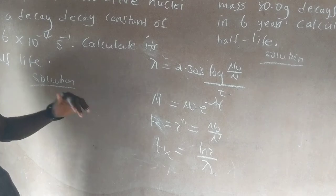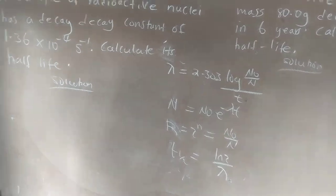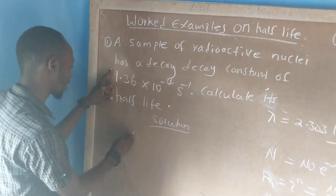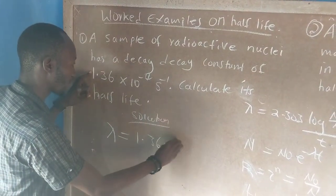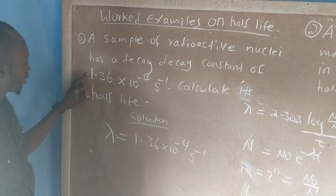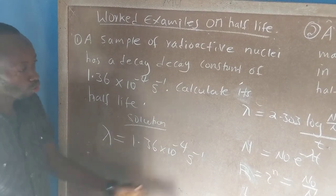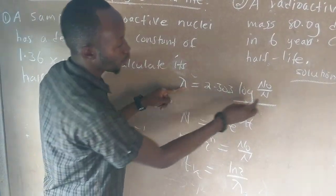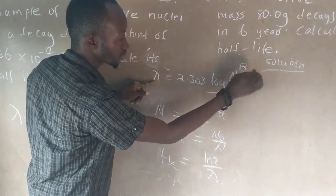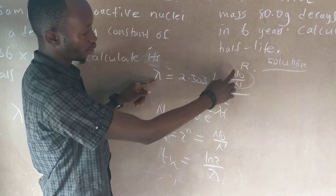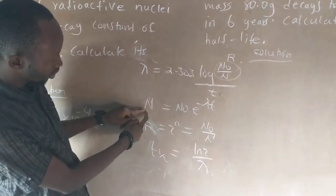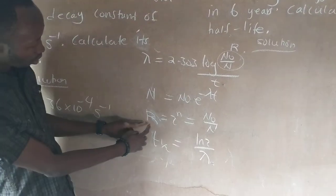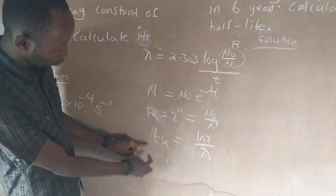The question: a sample of radioactive nuclei has a decay constant lambda equal to 1.36 times 10 to the power minus 4 per second. We are required to find its half life. Looking at the equations — we are not given the disintegration ratio N₀ over N, so we cannot use that. We have no time, no N₀, no N given, so the most appropriate formula is the last one.